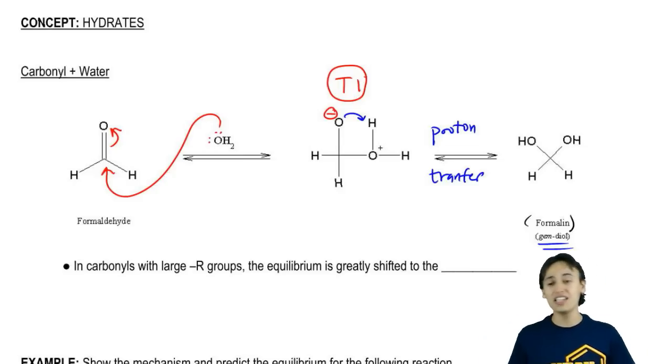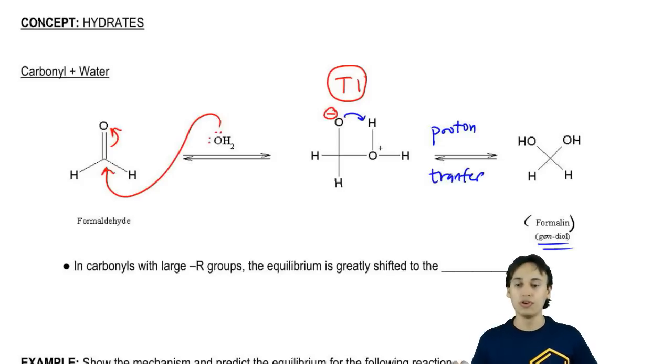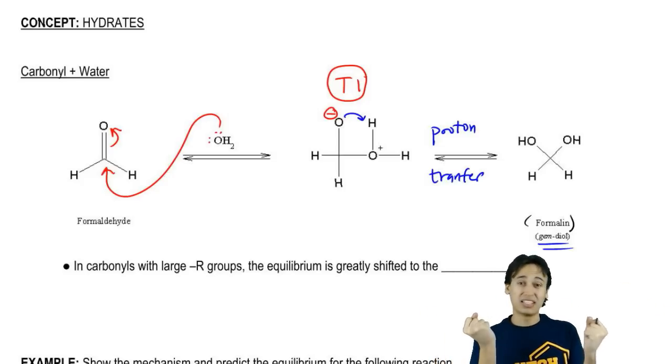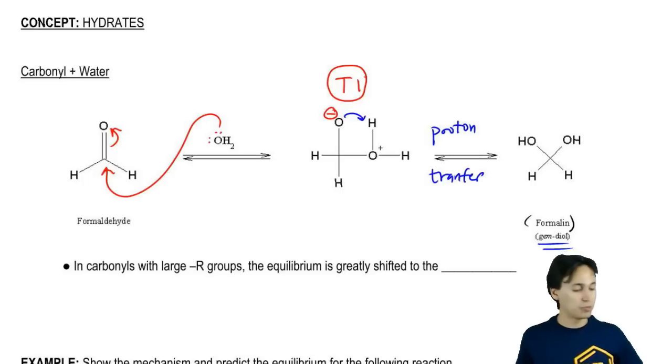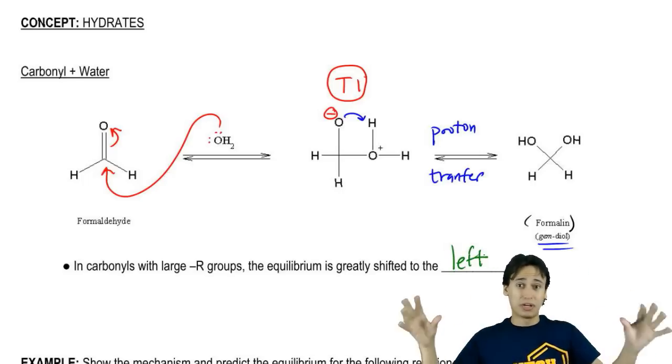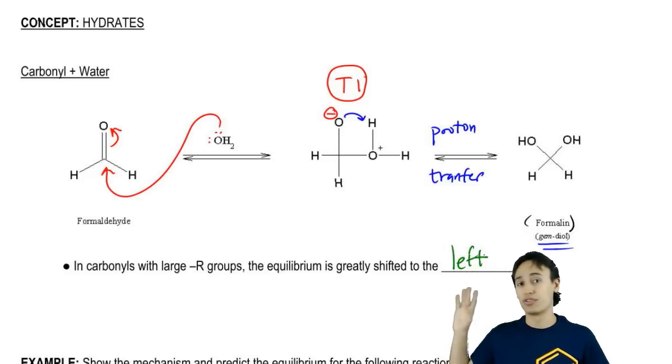It turns out that this reaction is not really synthetically useful because the larger the R groups get, the more bulky that tetrahedral intermediate is going to be and the less favored it is. The equilibrium is going to be greatly shifted to the left the bigger that the R groups are. So as your R groups get bigger and bigger, you're going to have more and more original carbonyl and less and less hydrate.